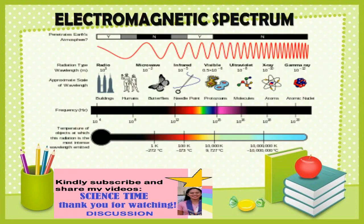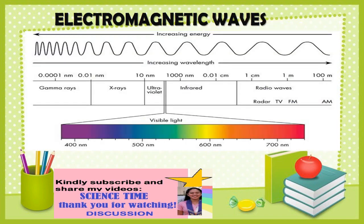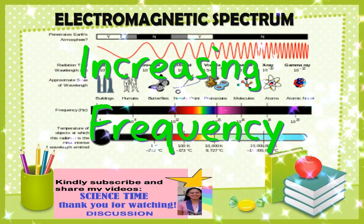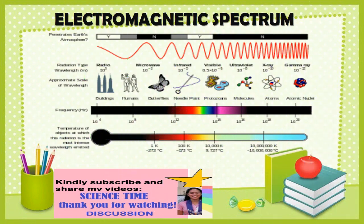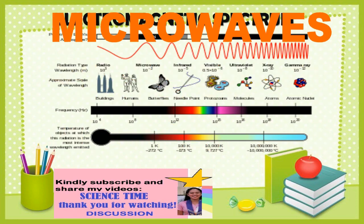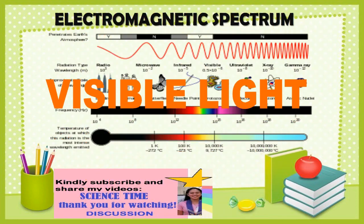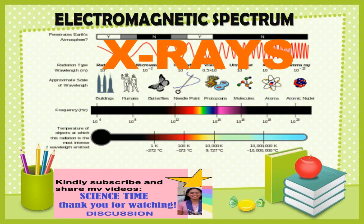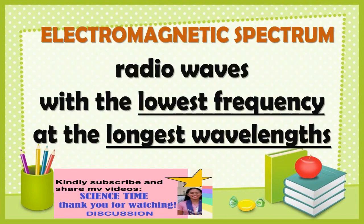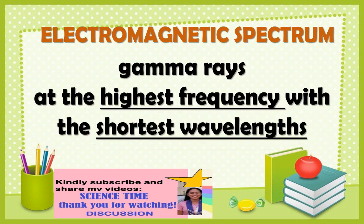The electromagnetic spectrum covers electromagnetic waves with frequencies ranging from below 1 Hz to above 10 to the 25 Hz. According to increasing frequency, the electromagnetic spectrum includes radio waves, microwaves, infrared, visible light, ultraviolet, x-rays, and gamma rays. It starts with radio waves at the lowest frequency and longest wavelengths, and ends with gamma rays at the highest frequency and shortest wavelengths.